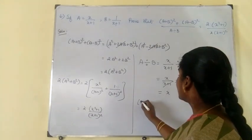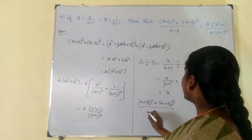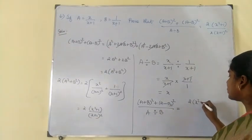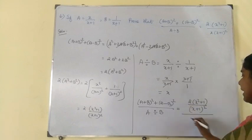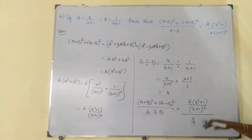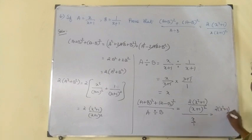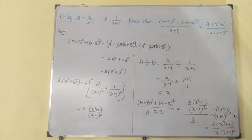Now substitute in the original expression: a plus b the whole square plus a minus b the whole square, divided by a divided by b, equals 2 into x square plus 1 by x plus 1 the whole square, divided by x. This gives 2 into x square plus 1 by x plus 1 the whole square, into 1 by x, which is 2 into x square plus 1 by x into x plus 1 the whole square. This is the required answer, and the expression is proved.